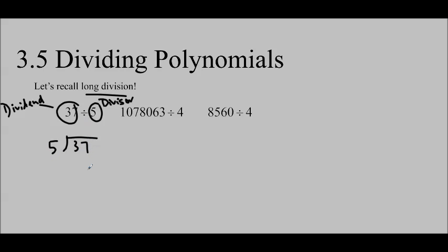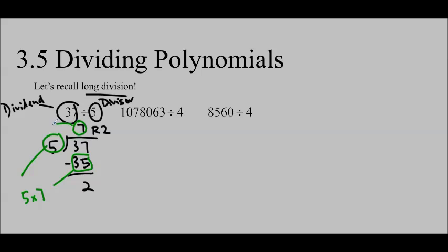5 goes into 37 seven times. 7 times 5 is 35, so we write 35 right there, and we subtract them off. We get 2, and then we're done, because we don't have any numbers left, so we can just write remainder 2. Just a reminder — 35 is 5 times 7, and that's where I got it. I took this number and multiplied it by this number.